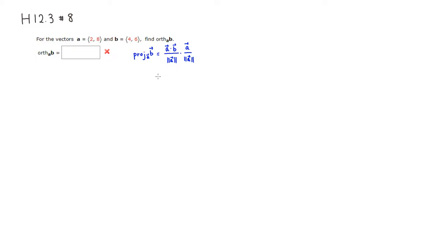Let's compute that. The dot product: 2 times 4 is 8, plus 8 times 6 is 48. The magnitude of A would be the square root of 2 squared, which is 4, plus 8 squared, which is 64 — so square root of 68.